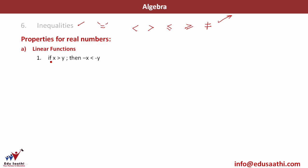If x is greater than y, then minus x would be less than minus y. For example, if 5 is greater than 3, minus 5 would be less than minus 3. So if you are multiplying with a negative sign, the sign of the inequality changes.